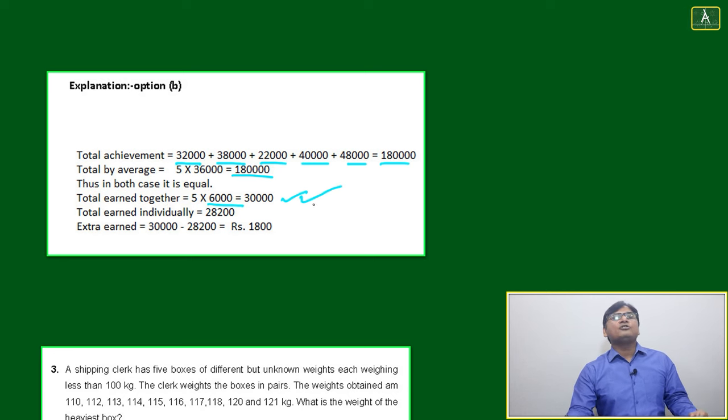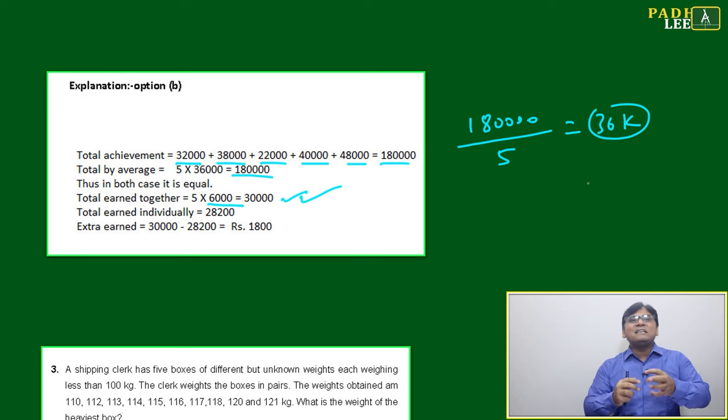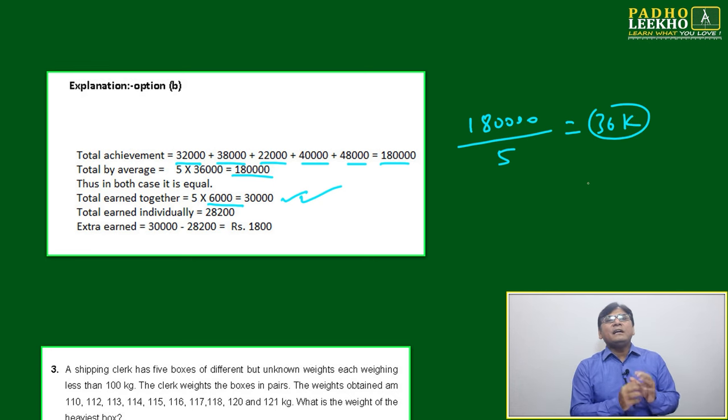Five collectively means we have added all the data, divided by 5, and got 36,000 exactly. 1 lakh 80,000 ÷ 5 = 36k. Once you are mixing all the data, the effective average is 36k per person, which equals the target. You will not get any incentive.